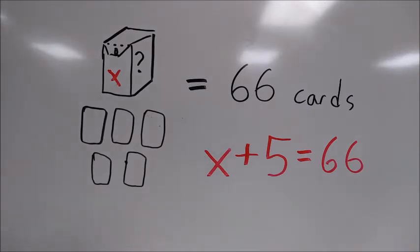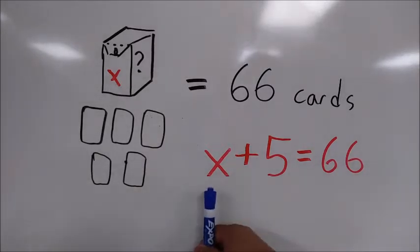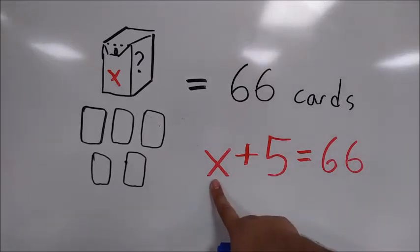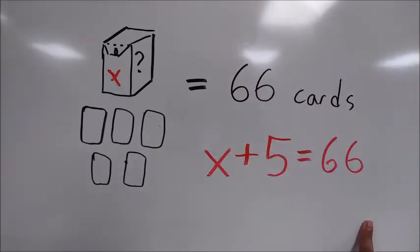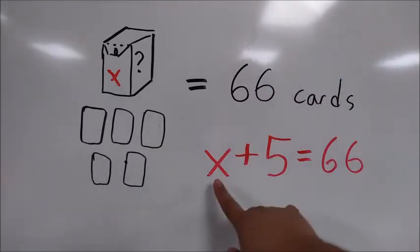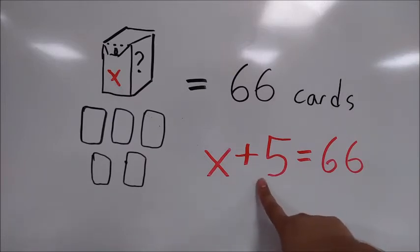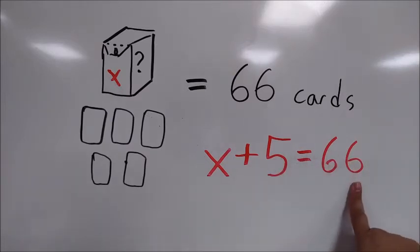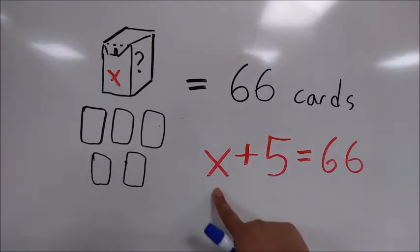What if we want to figure out what X is? Well, we can figure that out by isolating the variable. In other words, getting X all by itself on one side of the equal sign, so that we can say X equals whatever is on the other side of the equal sign. We see that X has 5 extra cards added to it, for a total of 66. So what we do is we do the opposite of whatever it is we're doing to the X in order to get X all by itself.